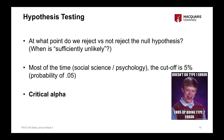Where that cutoff point is, is called our critical alpha level — the critical point where we move from a non-statistically significant effect to a statistically significant effect. Where that critical alpha is set is trying to make a balance between the chance of making a type 1 error versus a type 2 error. We never know if we've made either of these errors — all we can do is try to reduce the probability of making both.